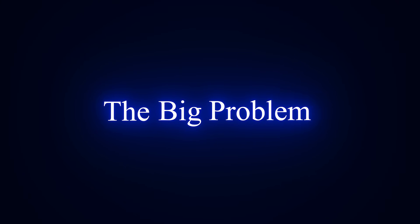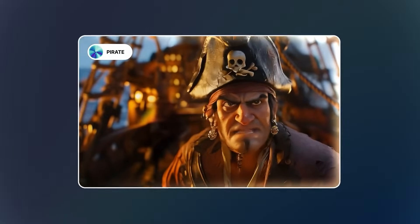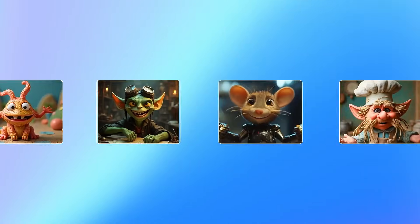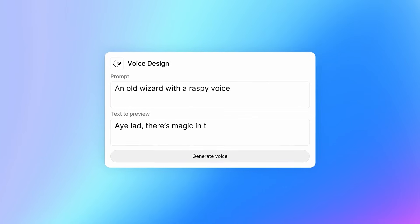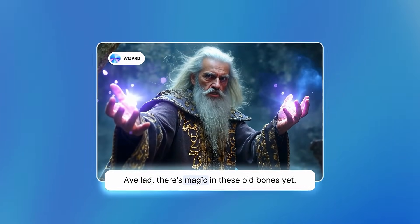The big problem that AI video and AI voices have in general is that when you rely on just the video to create them, the voices change every single generation. So we need a platform that can create consistent voices as well as allow us to direct emotion, so that we can create compelling characters easily all in one UI. To do that, we are going to be working in ElevenLabs today. ElevenLabs is my platform of choice for creating audio. It's incredibly cheap — I use a $5 a month plan, and that gives me more than enough credits to do any kind of voice work you would want to do.